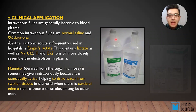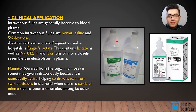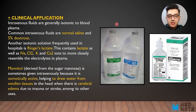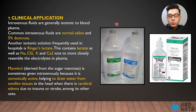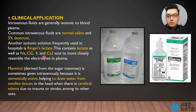The clinical application of tonicity relates to intravenous fluids, which are generally isotonic to blood. Isotonic means the concentration of molecules in the solution is similar to what we have inside our body cells. Common isotonic IV fluids are normal saline and 5% dextrose. Another frequently used isotonic solution is Ringer's lactate, which contains lactate, sodium, chloride, potassium, and calcium ions to more closely resemble the electrolytes of our body plasma.